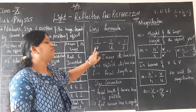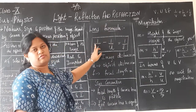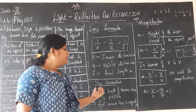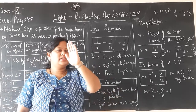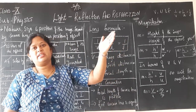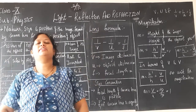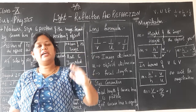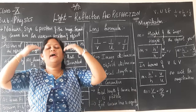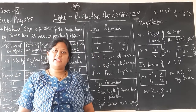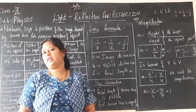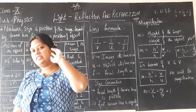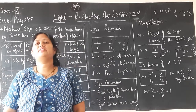So, the lens formula is 1/v − 1/u = 1/f. Always write v first — mirror formula has plus, lens formula has minus. Sign convention: all distances to the left of the lens are negative, all distances to the right are positive, the object is always on the left side, heights above the principal axis are positive, heights below are negative.